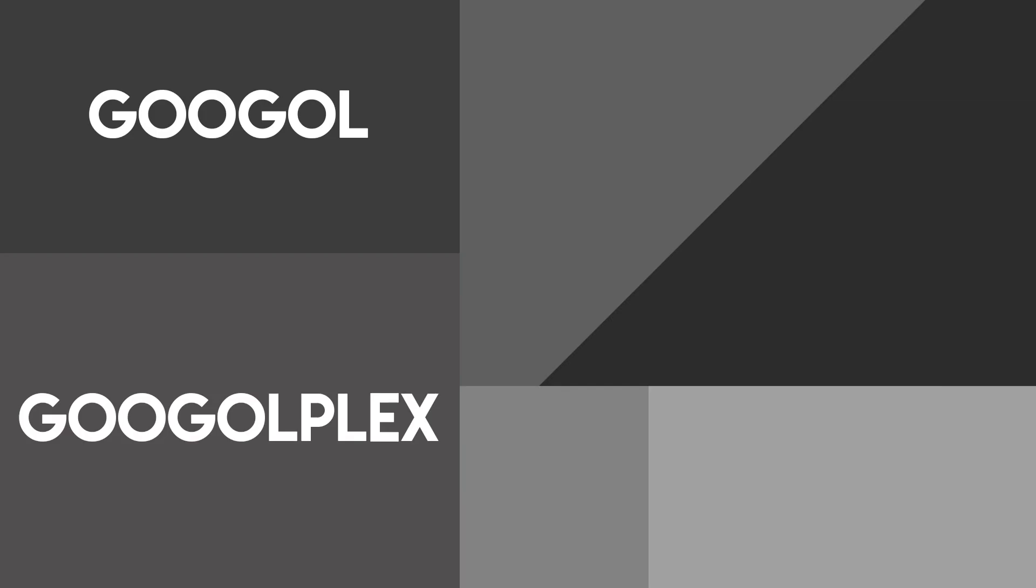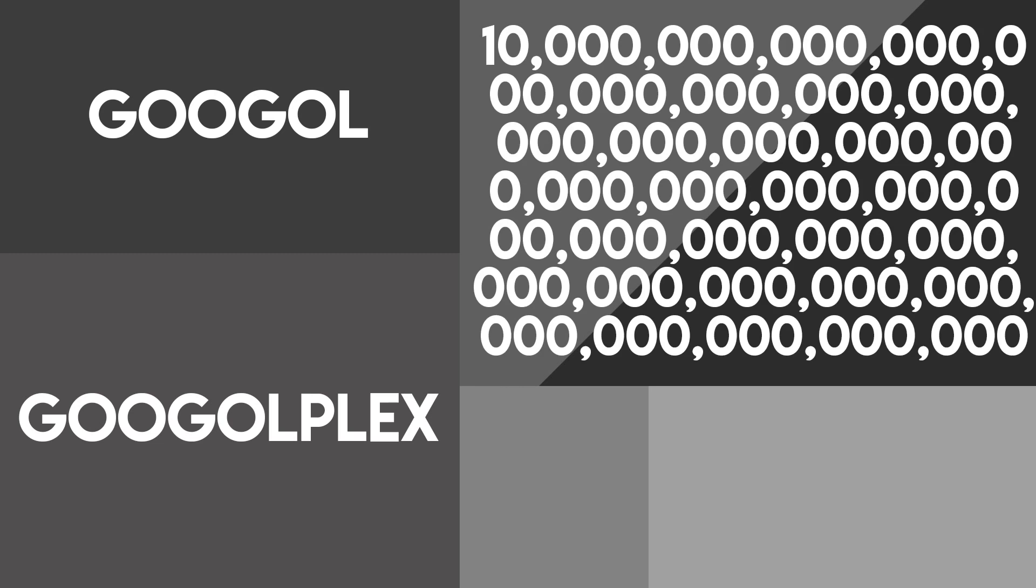Another thing you should know is how big a googol and a googolplex is. A googol is 1 followed by 100 zeros, and a googolplex is 10 multiplied by 10 googol times.